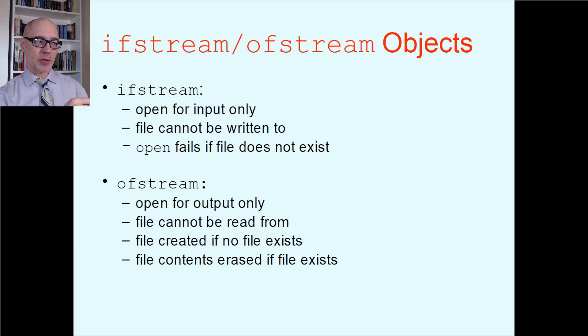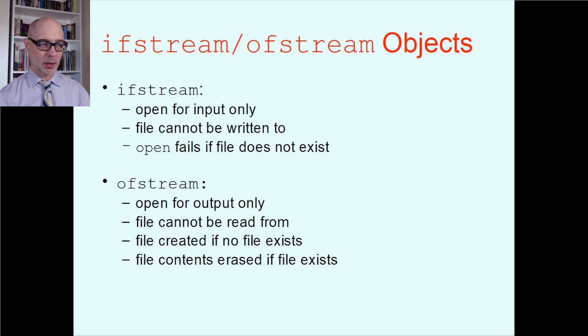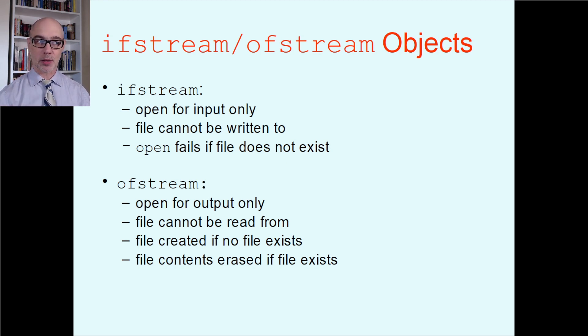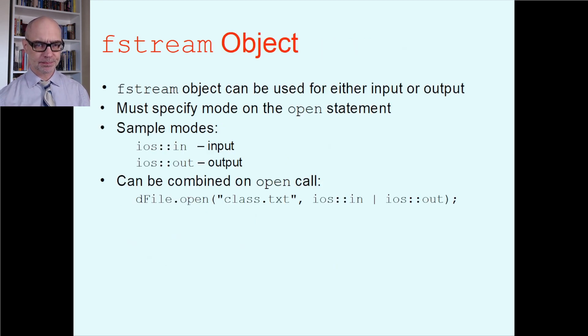Those two objects — ifstream and ofstream — are what we mostly focused on back in Chapter 5. So if you want more detail, go look at the Chapter 5 lectures. For the rest of this chapter, we're going to focus on the fstream object.